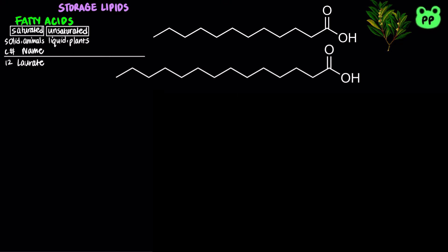A 14-carbon saturated fatty acid is known as myristic acid, named after the binomial name for nutmeg, Myristica fragrans. Besides nutmeg, myristic acid is also found in palm kernel oil, coconut oil, butterfat, bovine milk, and breast milk.